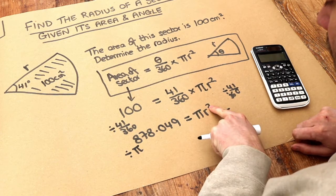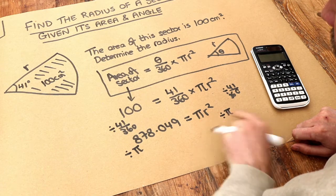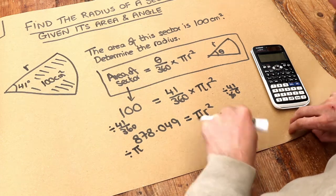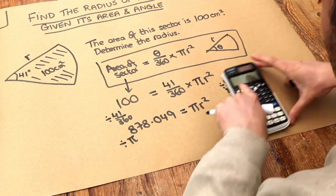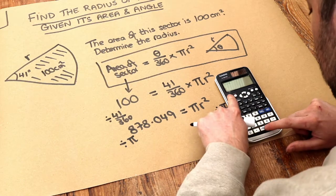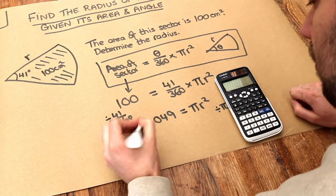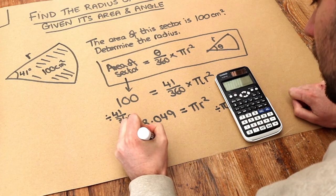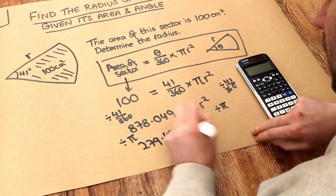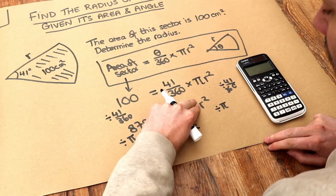So we want to undo the last thing we did of multiplying by pi by dividing by pi. So our current value, we can just use the answer key, we divide that by pi, and that gives us 279.492. And dividing this by pi just gets rid of that times by pi, leaving R squared.